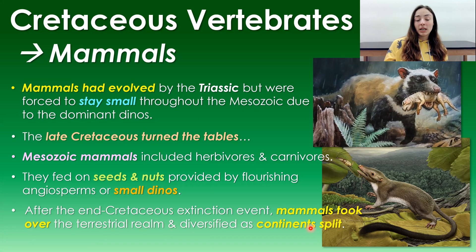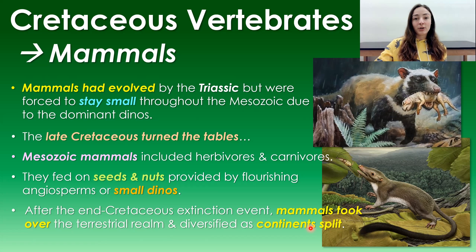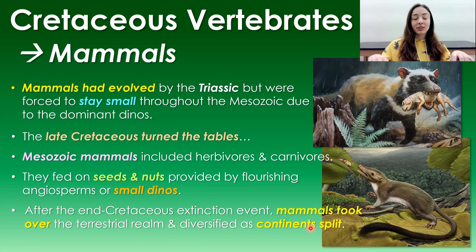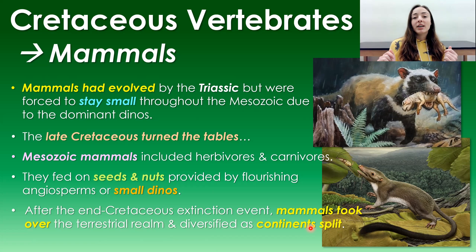After the end-Cretaceous extinction, mammals took over the terrestrial realm and diversified further as continents split. The splitting of the continents caused more population isolation events and therefore more speciation — the formation of new species — driving the great diversification of mammals into the Cenozoic and ultimately making us possible.